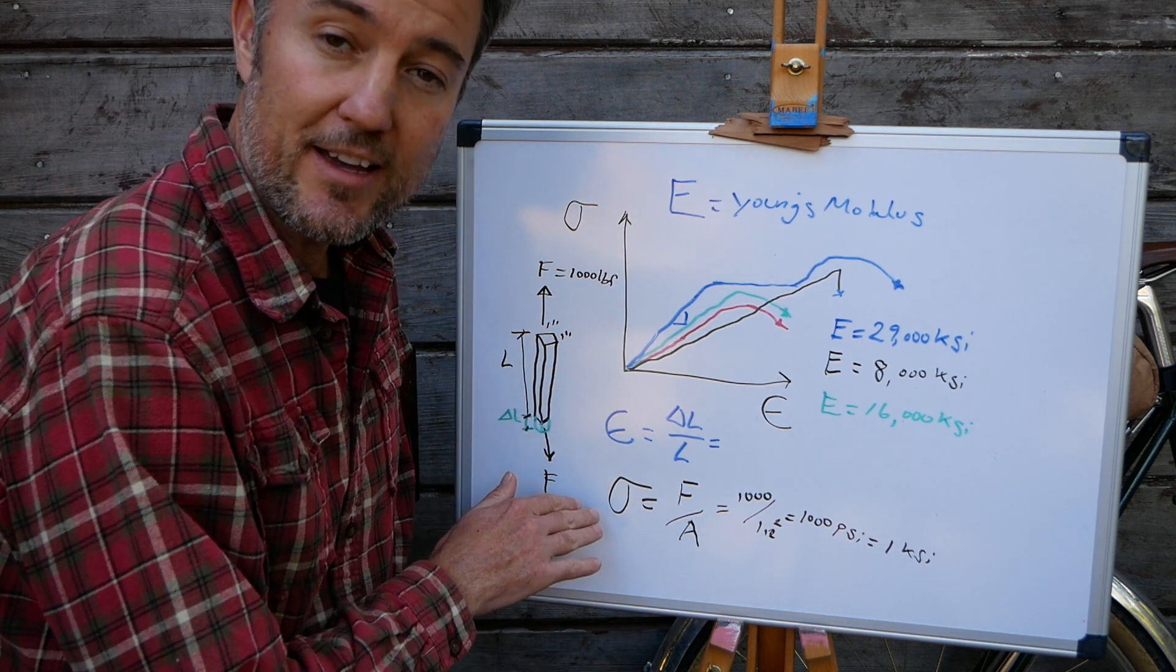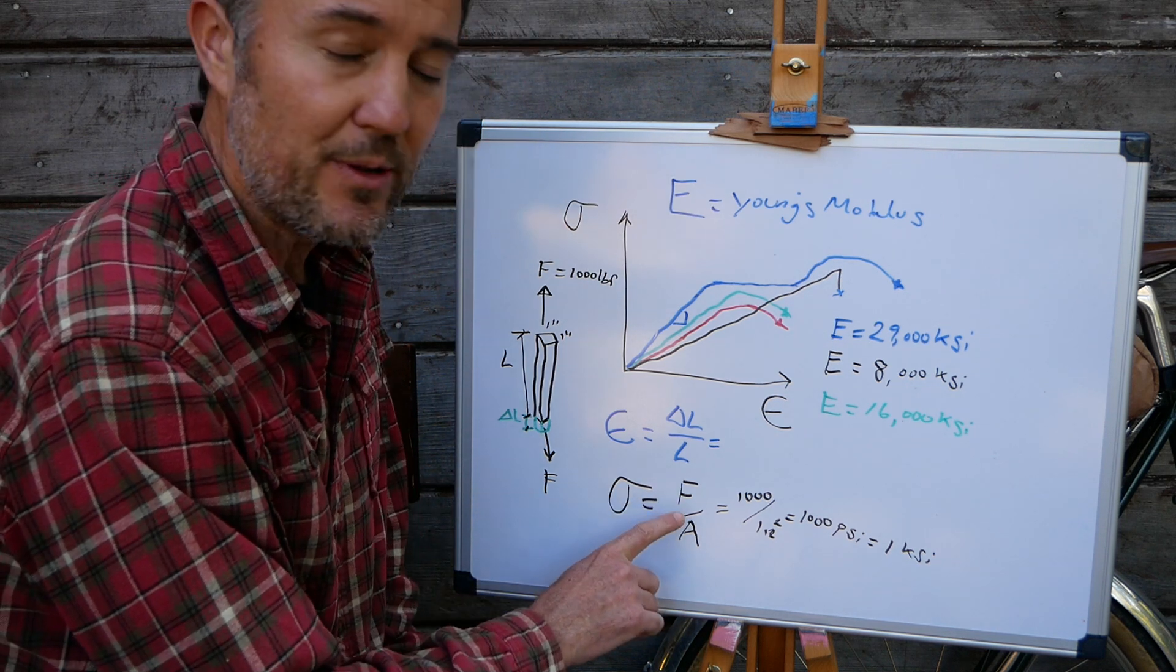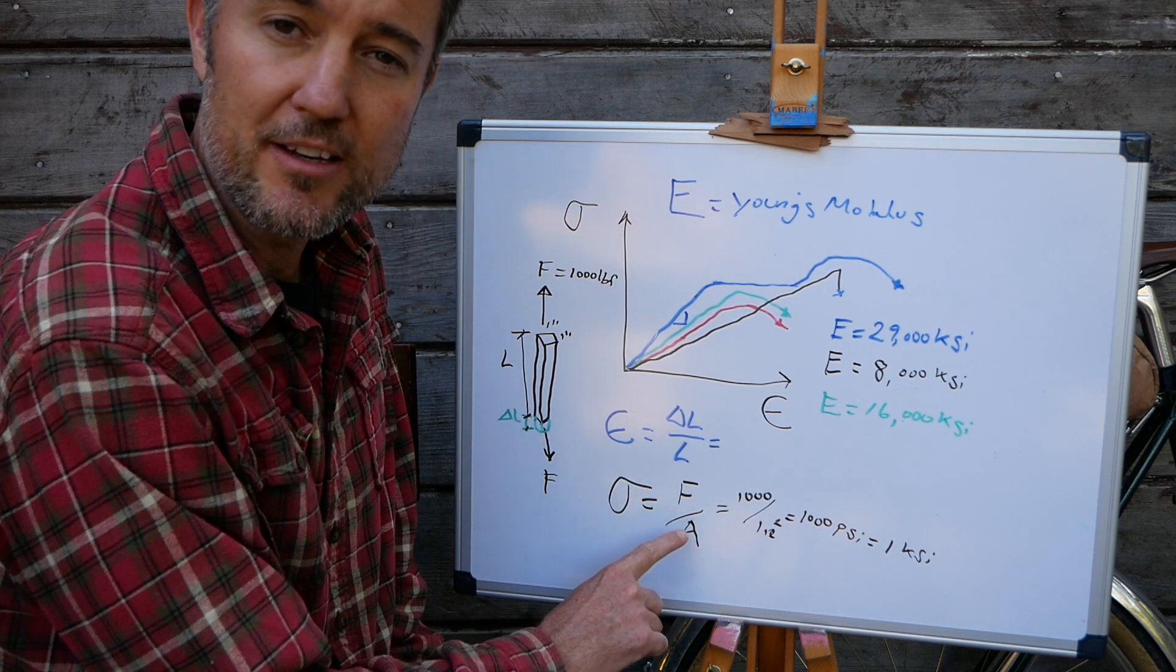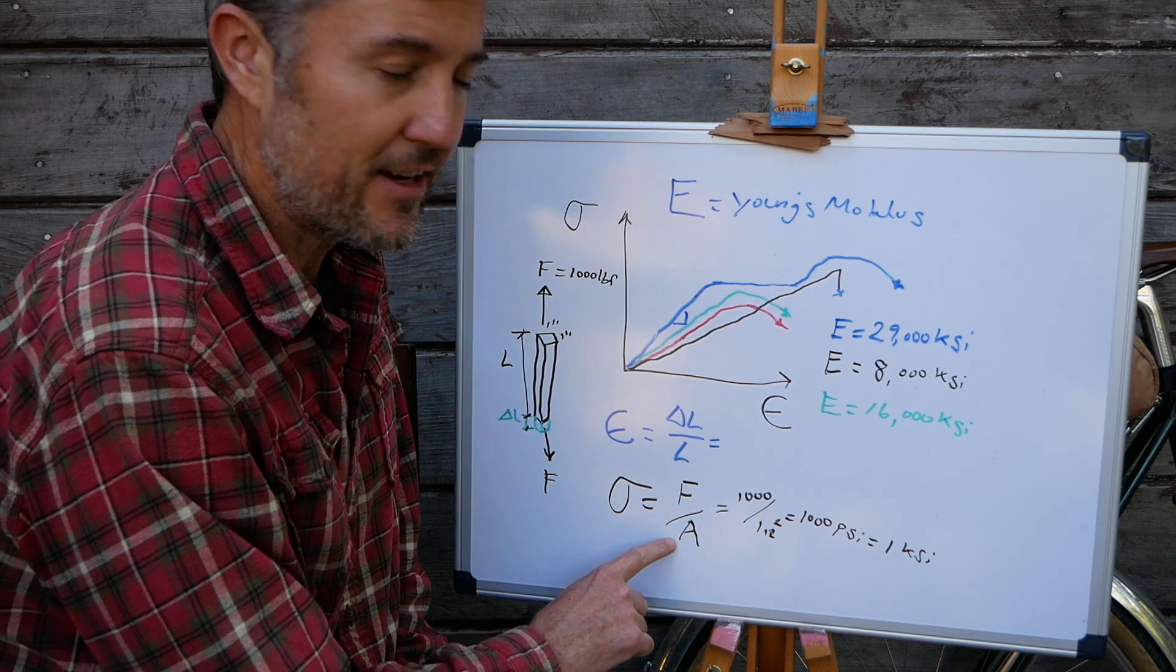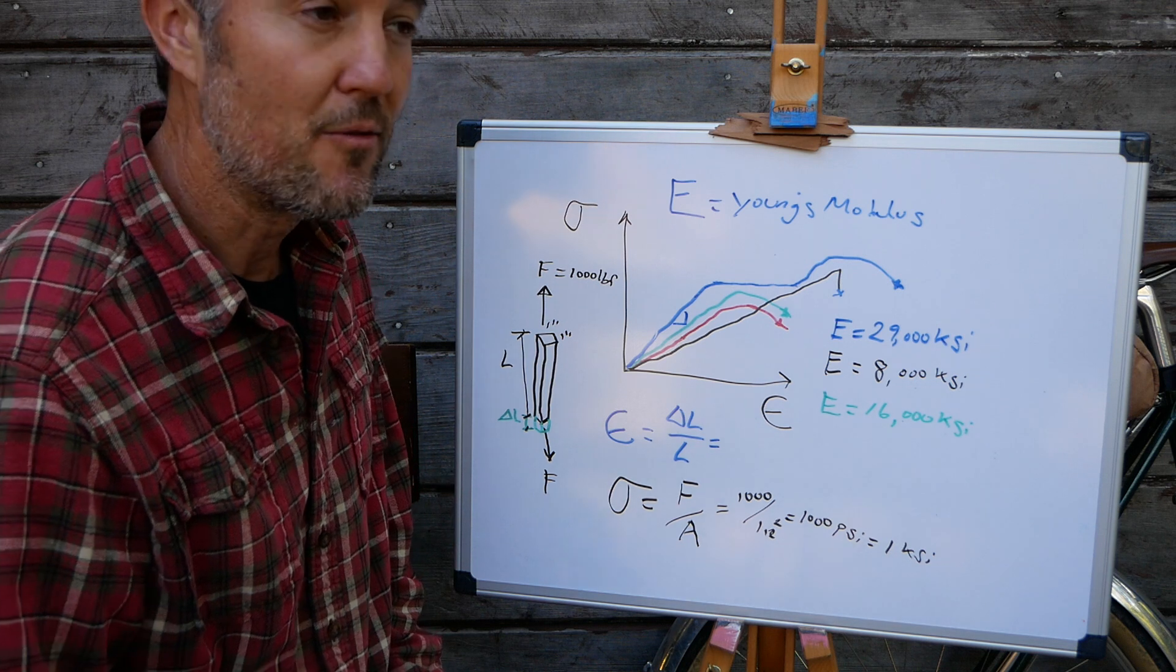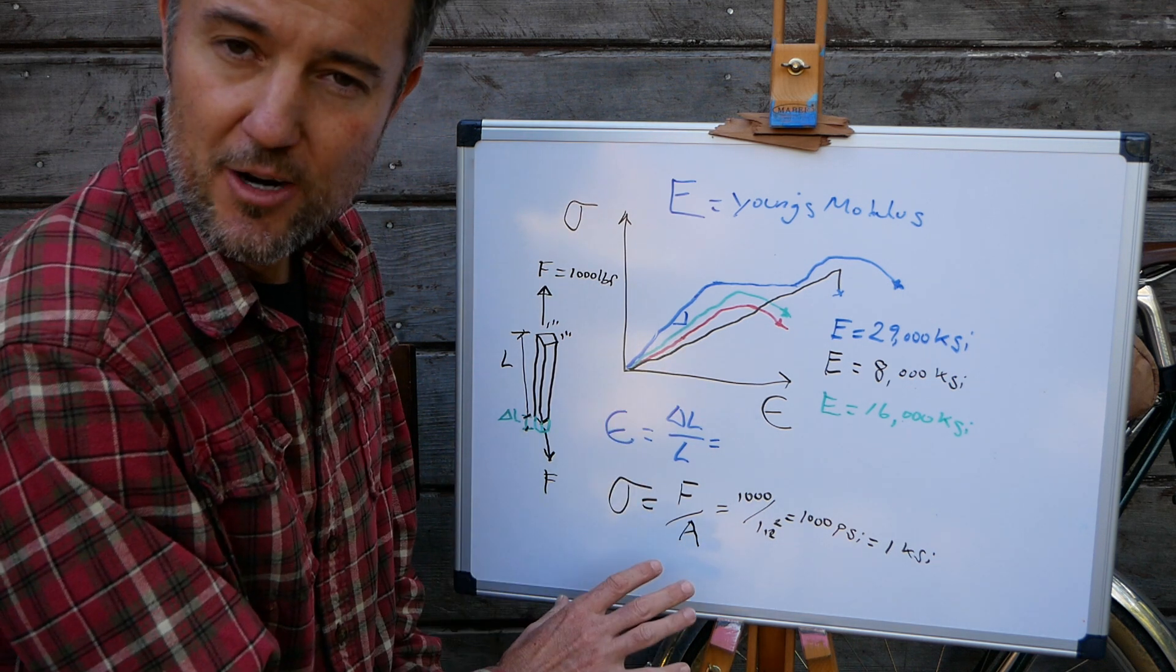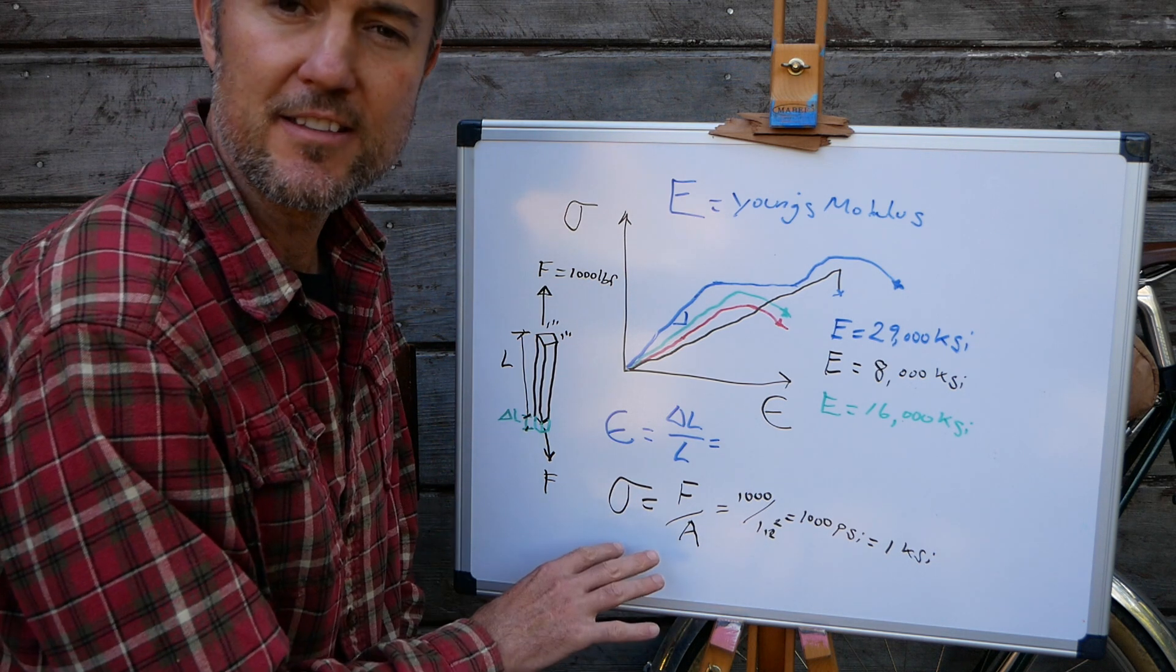So stress in an engineering sense is simply the amount of force that's applied to an object divided by its cross sectional area. Now this is a very simplified, probably oversimplified explanation, but just hear me out on this and hopefully it'll make sense in a little bit.